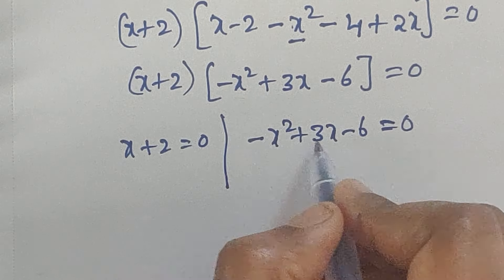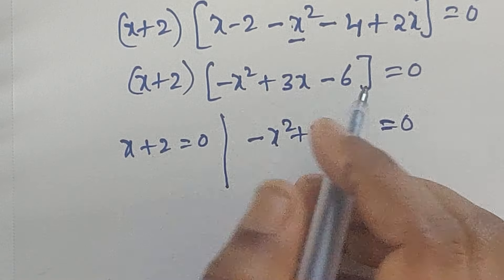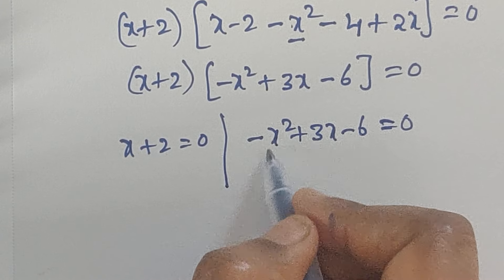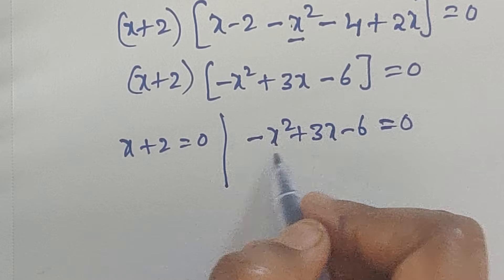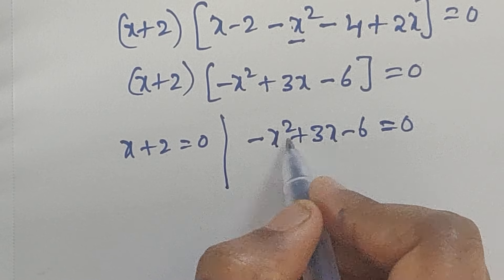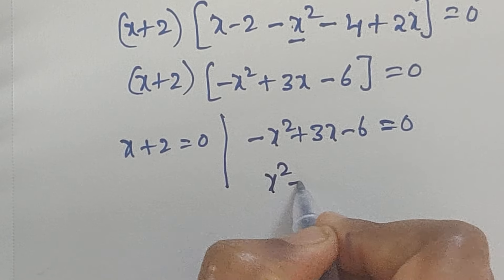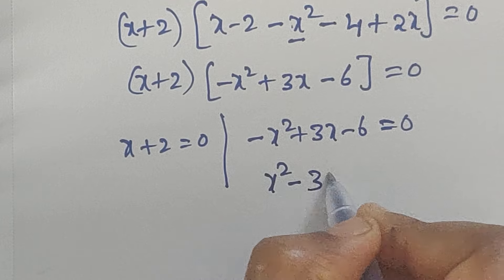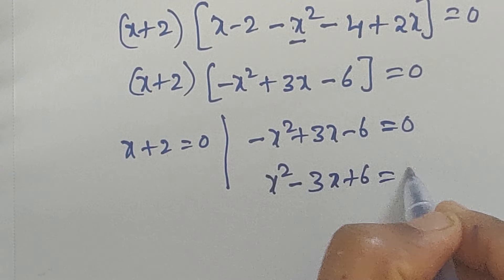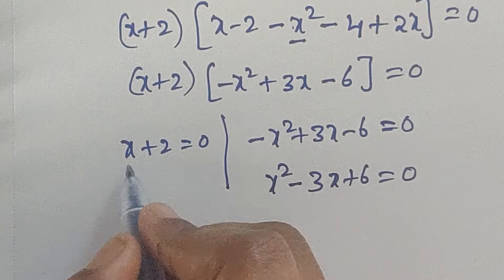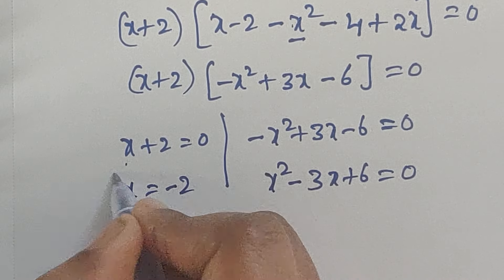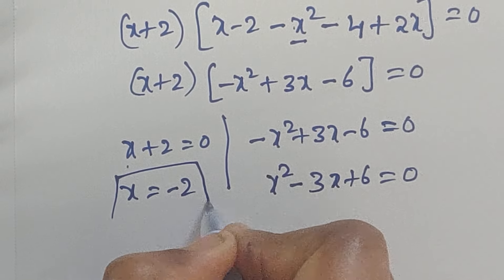Here we can take out the negative sign as common, so it becomes x squared minus 3x plus 6 equals 0. And from (x plus 2) equals 0, we get x equals minus 2. This is one solution.